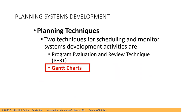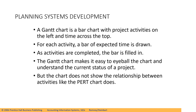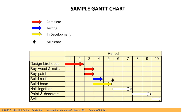We also have the Gantt chart, which is another technique for scheduling and monitoring system development activities. A Gantt chart is a bar chart with project activities on the left and time across the top. For each activity, a bar of expected time is drawn. As activities are completed, the bar is filled in. The Gantt chart makes it easy to eyeball the chart and understand the current status of the project, but the chart does not show the relationship between activities like the PERT chart does. In our example Gantt chart, you can put labels — if it's complete it's red, testing is blue, in development is yellow, and there is a milestone. However, in the Gantt chart there are no relationships shown, unlike in PERT.